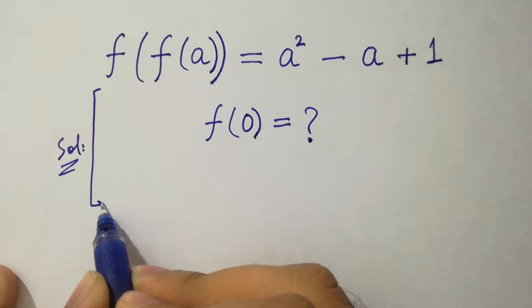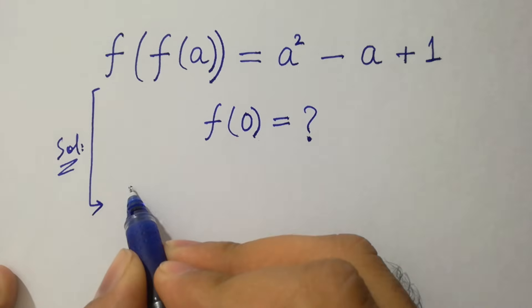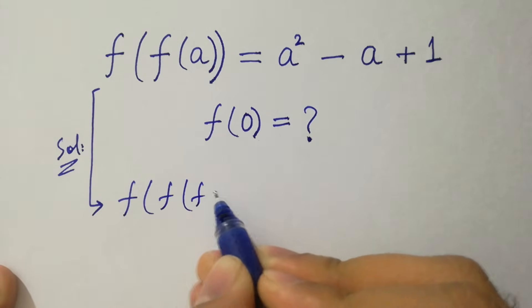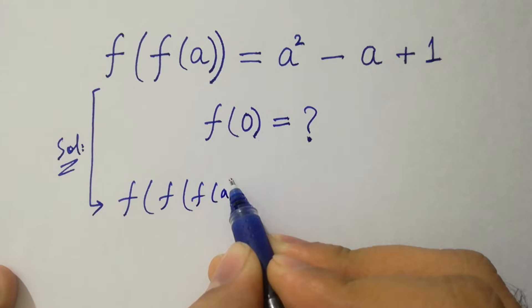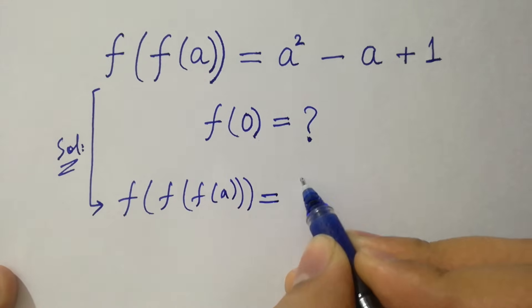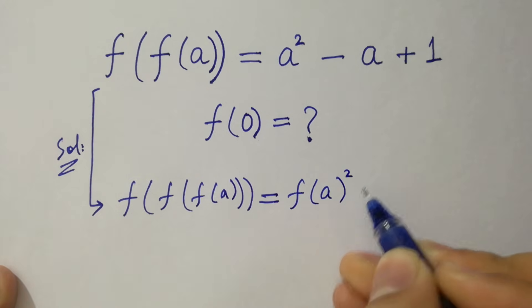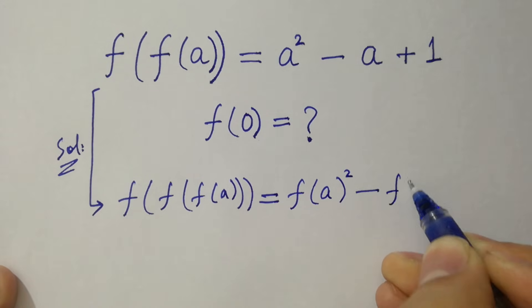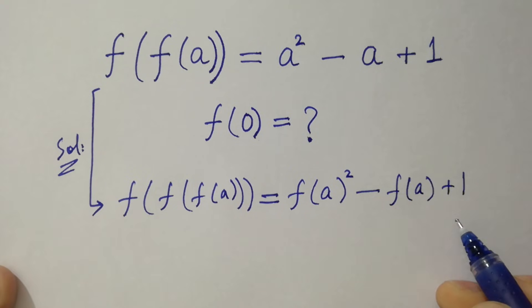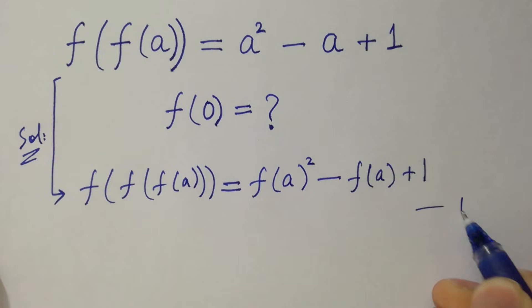To solve this problem, we have that f of f of a equals f of a squared minus f of a plus 1. Say this is the first equation.